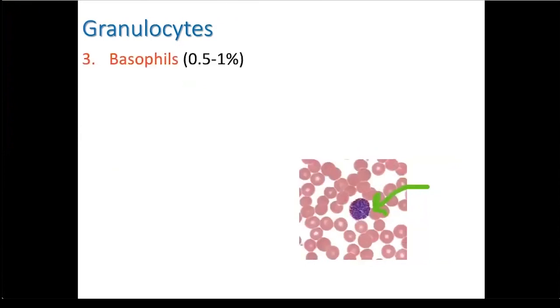The third type of granulocyte is a basophil. Recall that these are the rarest, making up only half of a percent to one percent of the leukocytes. They have dark staining granules, which really obscure the nucleus.